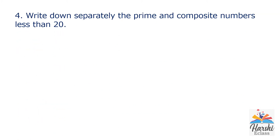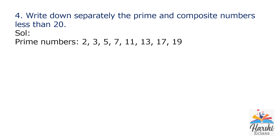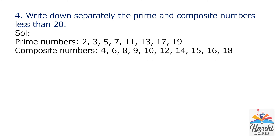Question 4: Write down separately the prime and composite numbers less than 20. We know that 1 is neither prime nor composite. The prime numbers are 2, 3, 5, 7, 11, 13, 17, 19. The composite numbers start from 4: 4, 6, 8, 9, 10, 12, 14, 15, 16, 18.